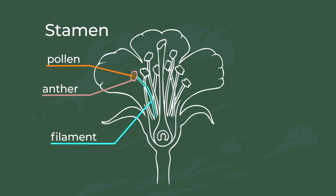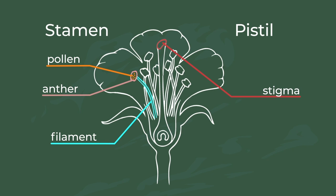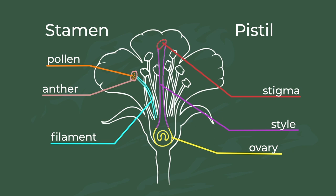Now let's look at the female part. The female part is called the pistil and comprises of the stigma, the style, and the ovary which has ovules in it. So how does a flower bear fruit?